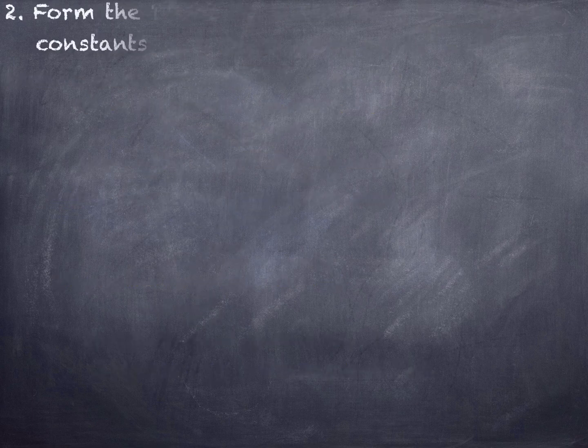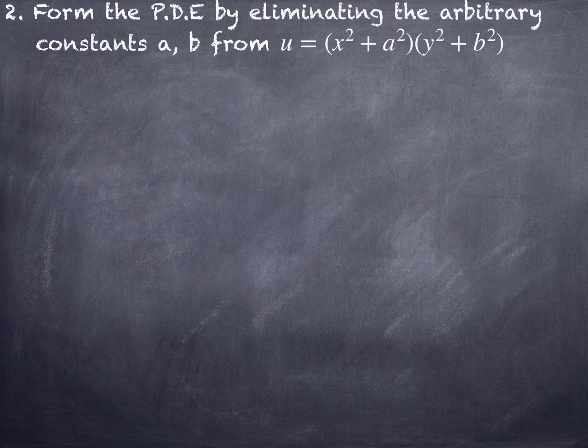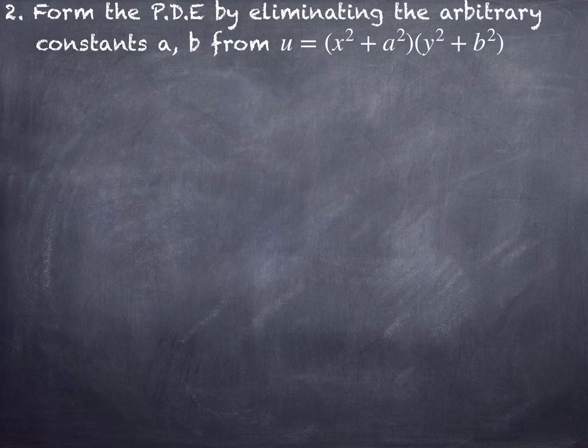Moving to the second problem: form the PDE by eliminating the arbitrary constants a, b from u equals (x²+a²)(y²+b²). Before solving, observe the given variables. Here u is a function of x and y, and z is not mentioned — so we cannot use the standard notations p, q, r, s, t. For derivatives of u with respect to x and y, keep them as is. This is a very important point to remember.